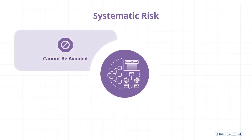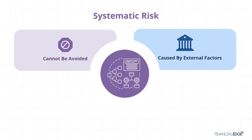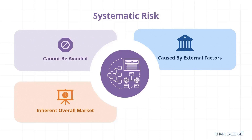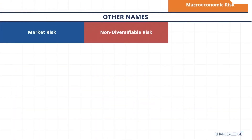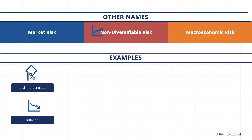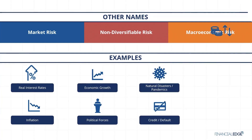Systematic risk is risk that cannot be avoided at the firm level and is inherent in the overall market. It is non-diversifiable because it includes risk factors that are innate within the market and affect the market as a whole. Systematic risk is also caused by factors that are external to the organization. While it is not diversifiable, in theory all firms or entities are exposed to it — though one can control how much they are exposed to it by using methods like hedging and asset allocation. There are many examples of factors that constitute systematic risk, including interest rates, economic cycles, political uncertainty, and widespread natural disasters.